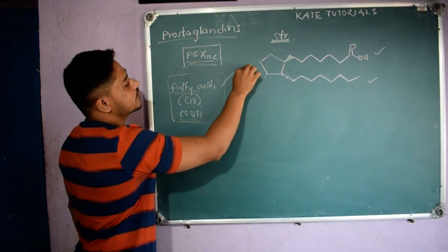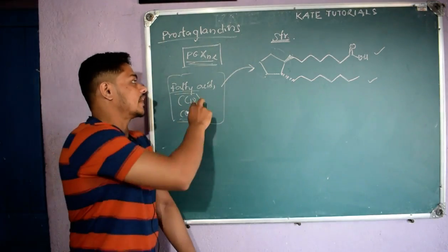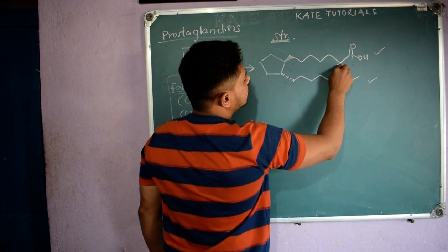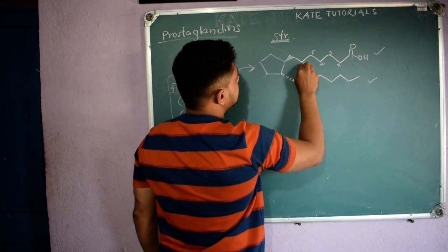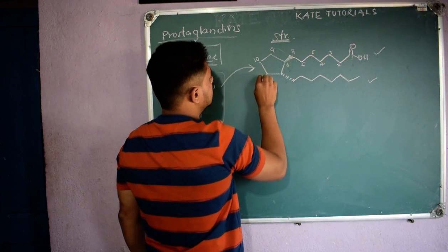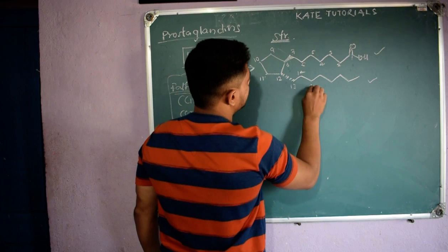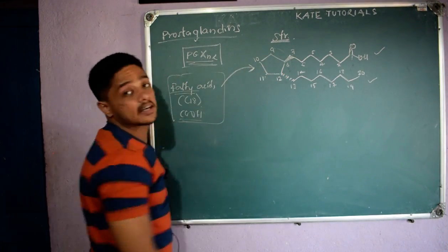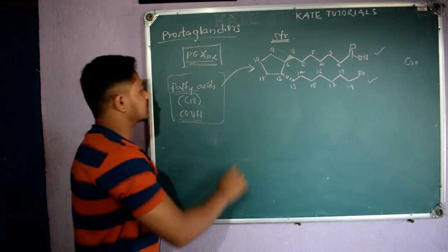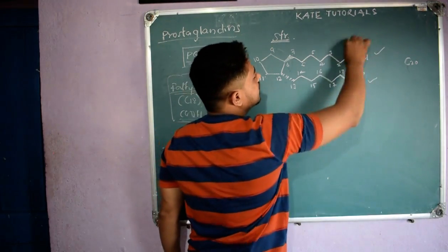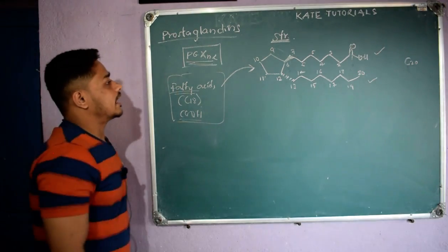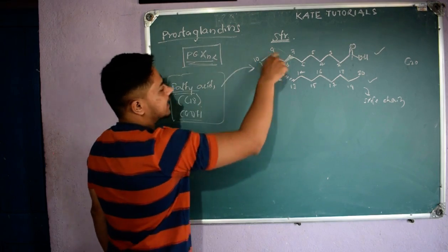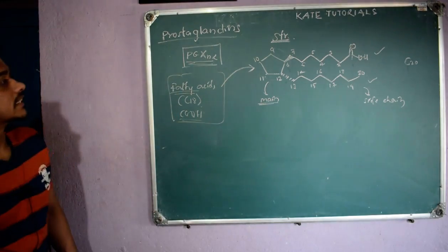In the biosynthesis, from fatty acids only we produce prostaglandins — we shall see that in upcoming videos. Numbering goes 1 through 20 across the structure. Total 20 carbons are there. We call them fatty acid derivatives because of the COOH group. The two chains are called side chains, and the cyclopentane ring is the main ring.